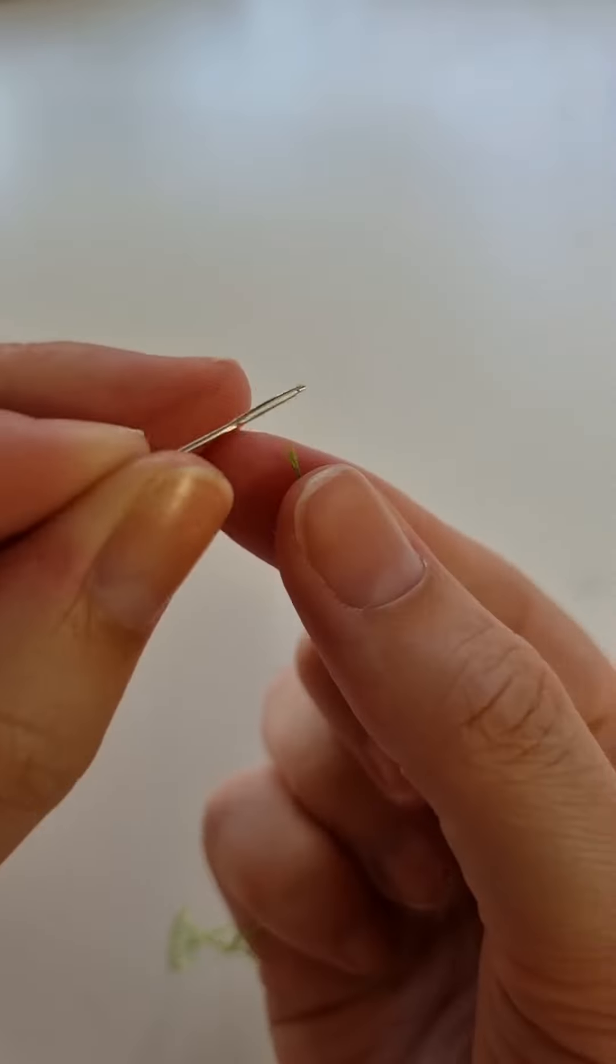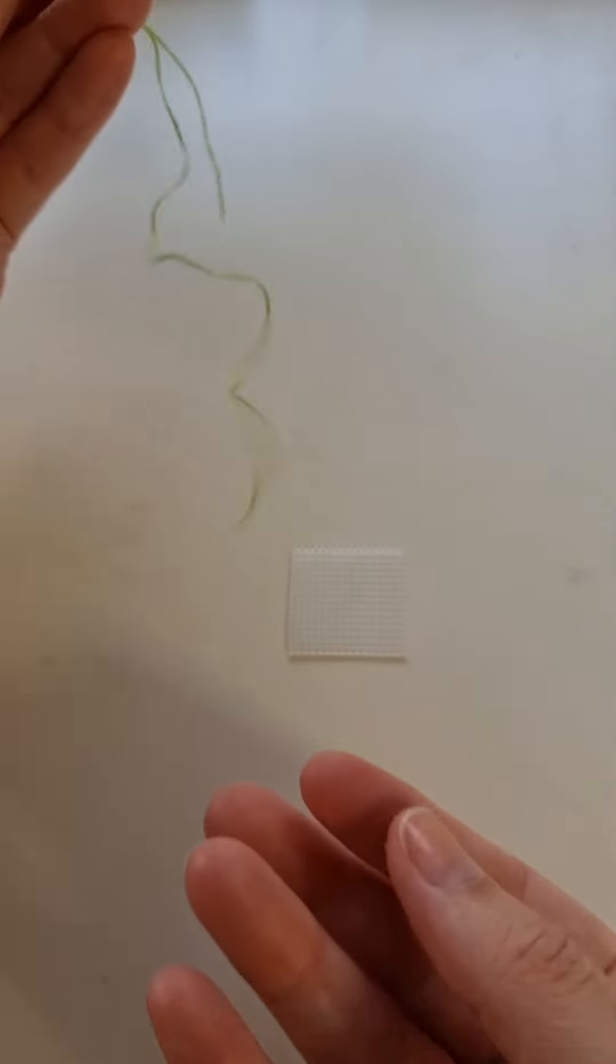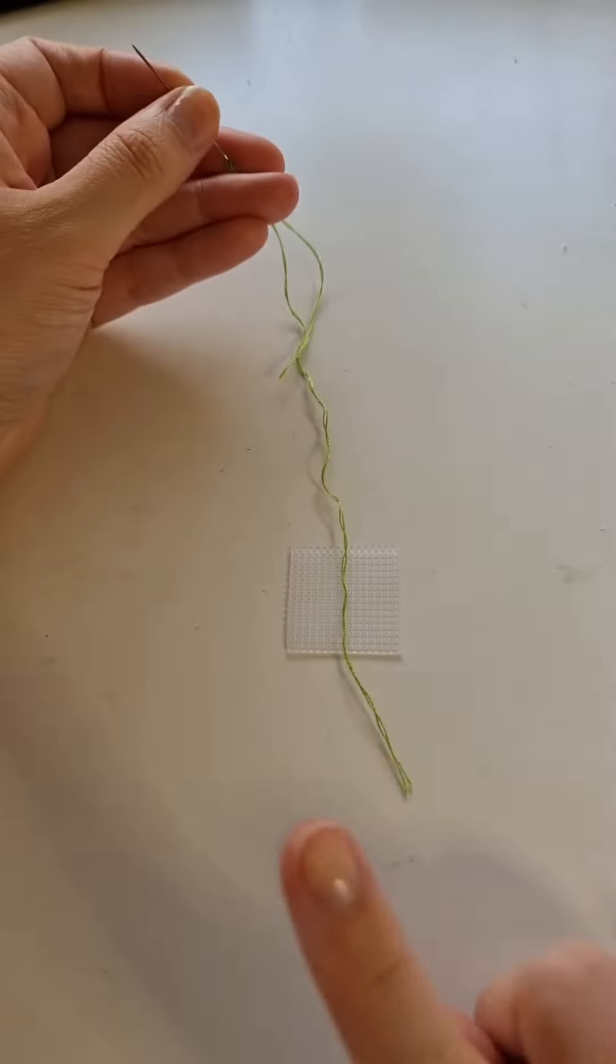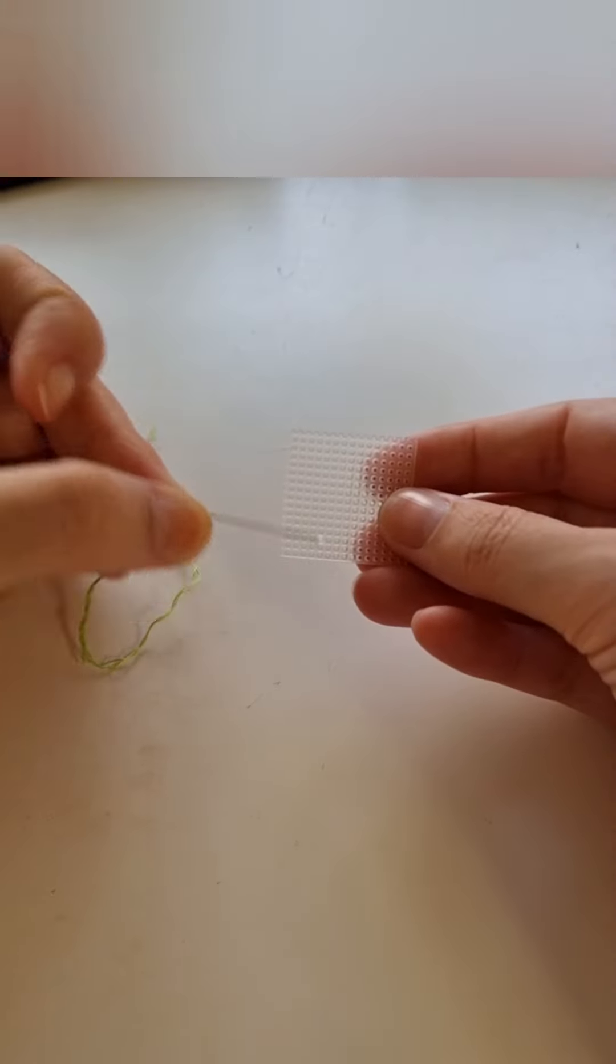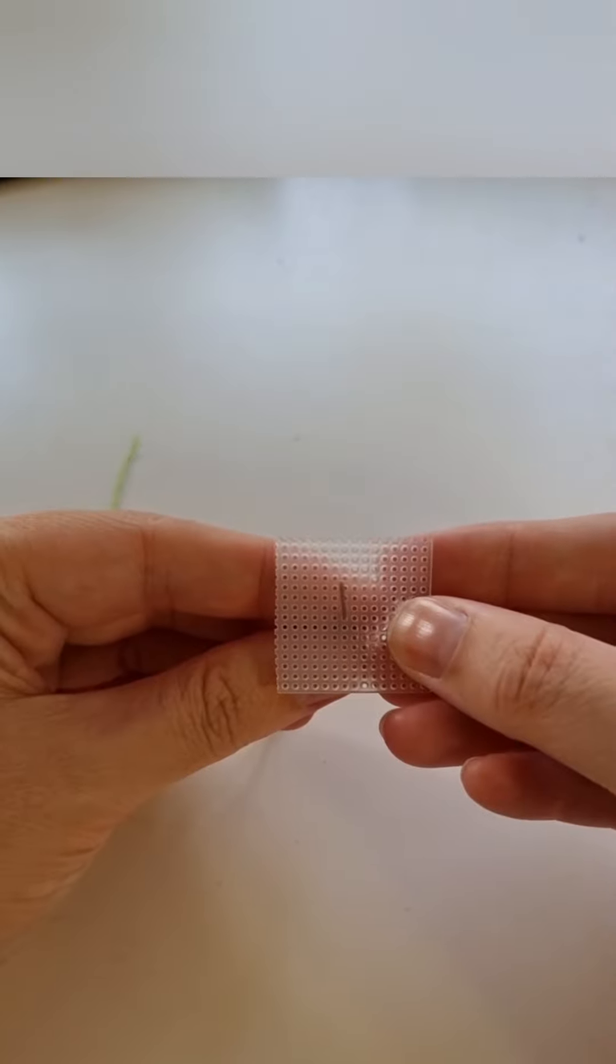Thread your needle with the two strands and don't tie a knot in the end. Now find the center of your plastic canvas and poke a hole in the middle coming up from the back.